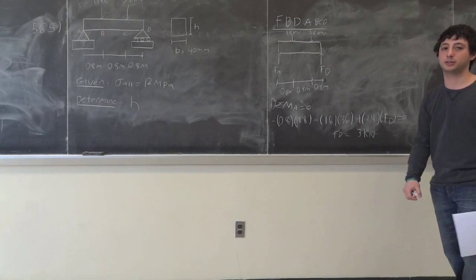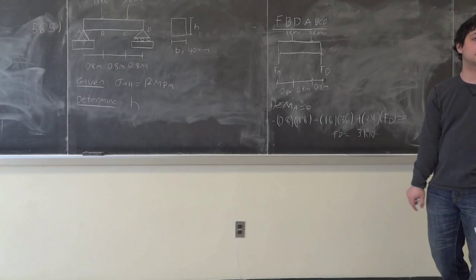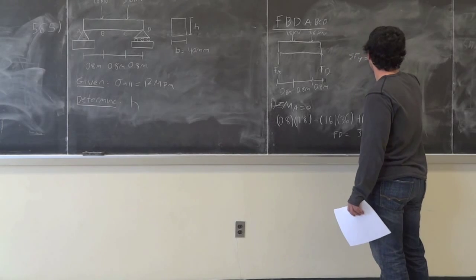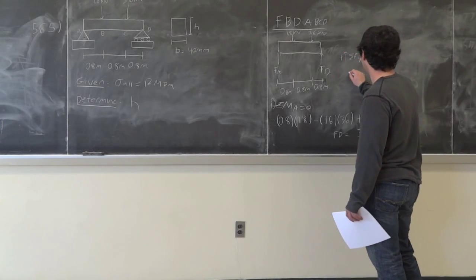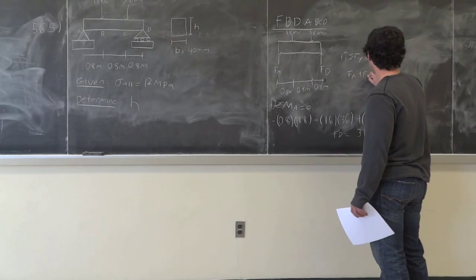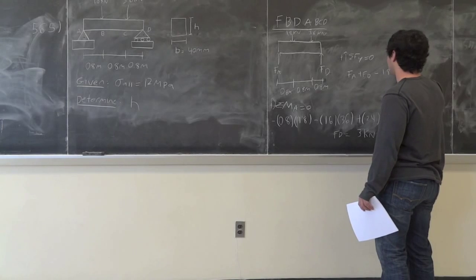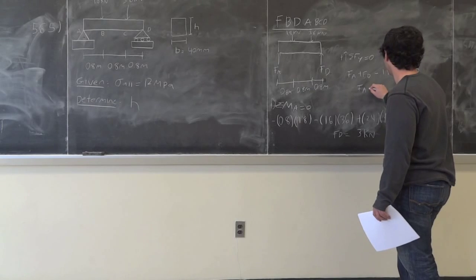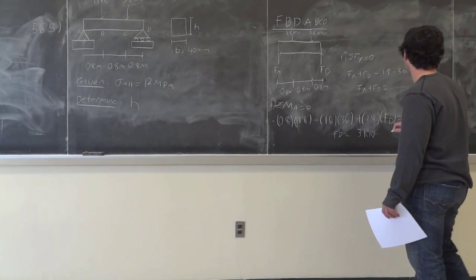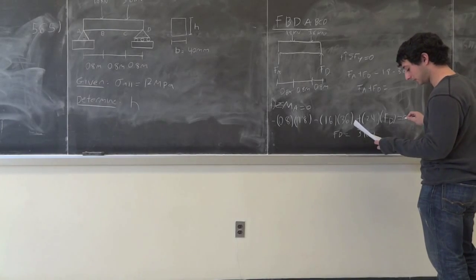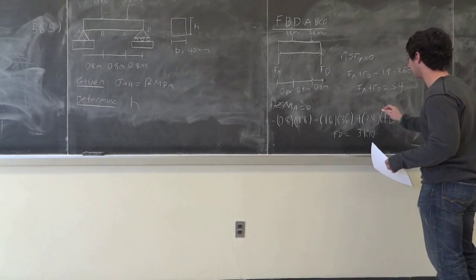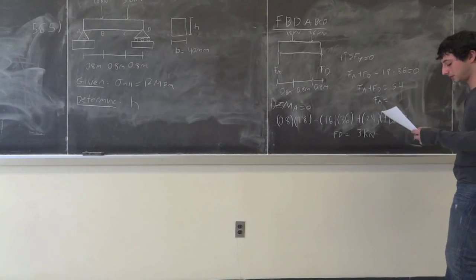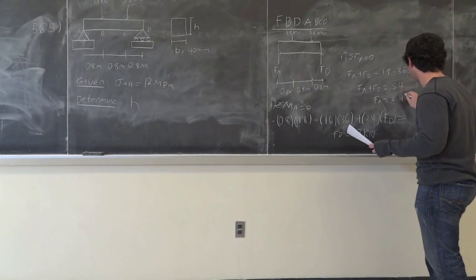Now we want to find the reaction at A. Sum of forces in the y-direction should be 0, taking upwards to be positive. We have F_A plus F_D minus 1.8 minus 3.6 is equal to 0. So F_A plus F_D is equal to 5.4. Therefore F_A is equal to 2.4 kN.